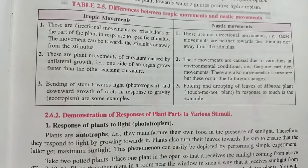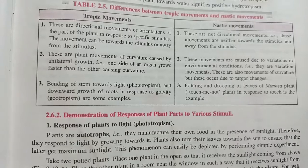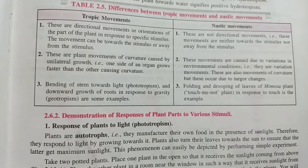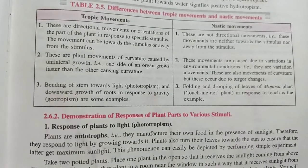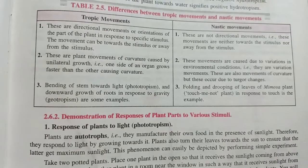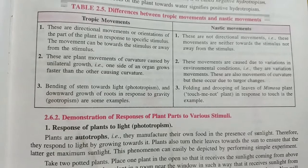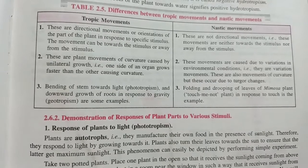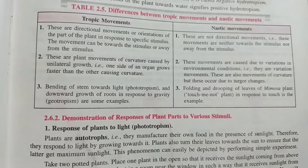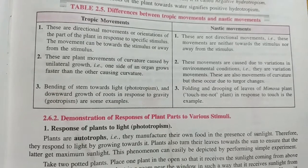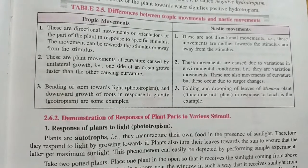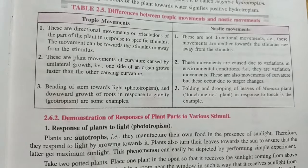Tropic movements — the next point: these are the plant movements of curvature caused by unilateral growth, that is, one side of an organ grows faster than the other, causing curvature.